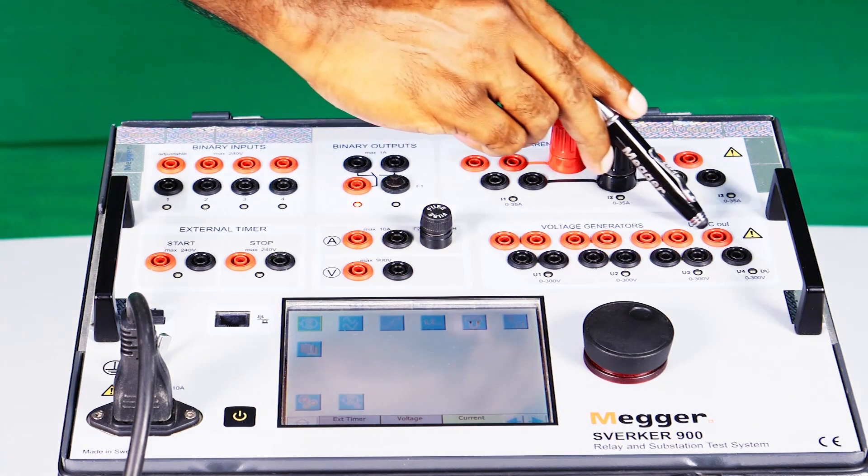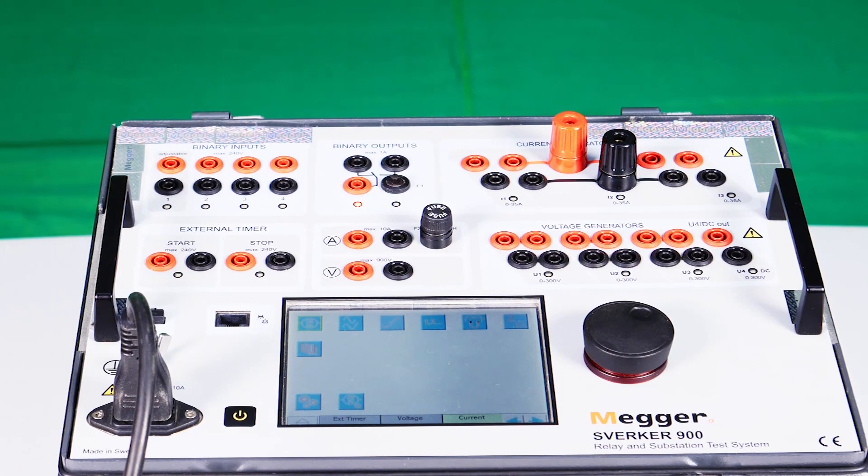The fourth voltage generator can be used along with the 1st, 2nd, and 3rd generator for injecting the above said values.